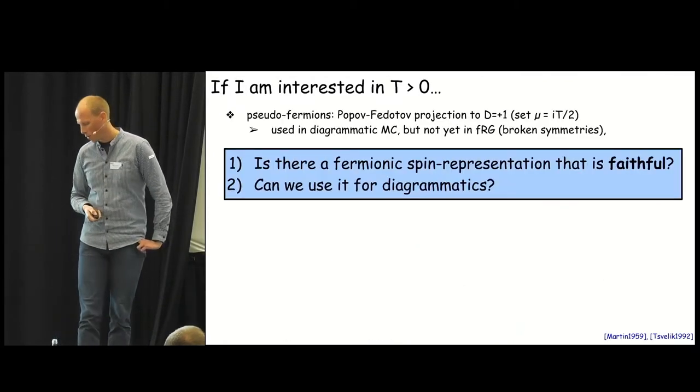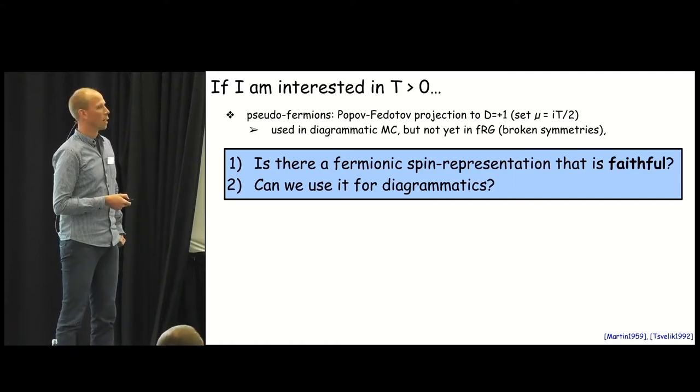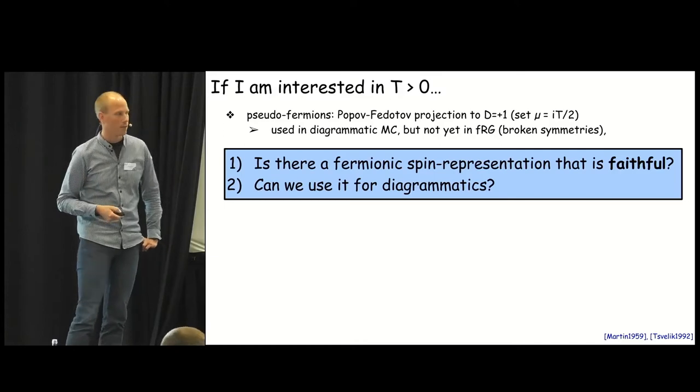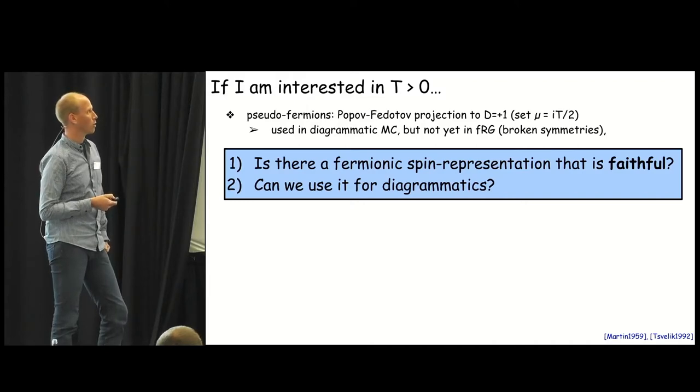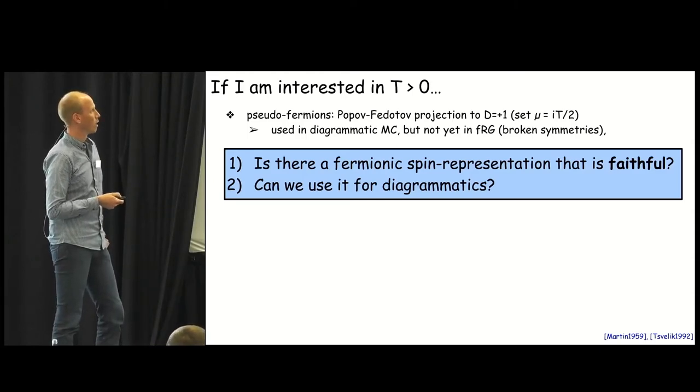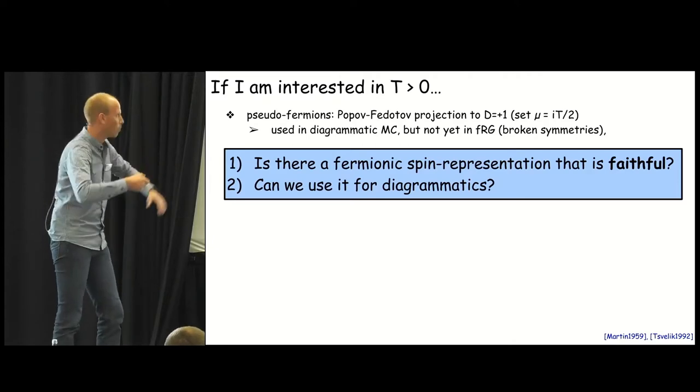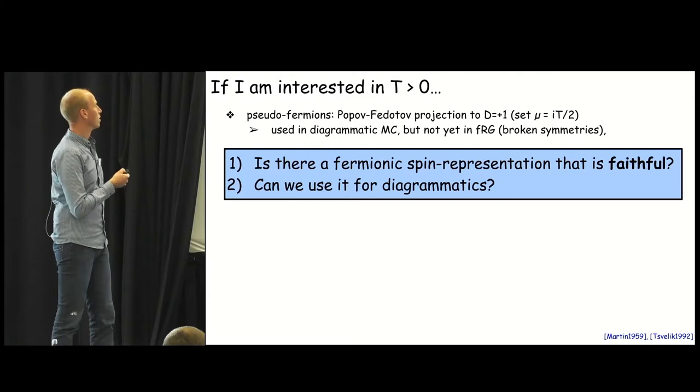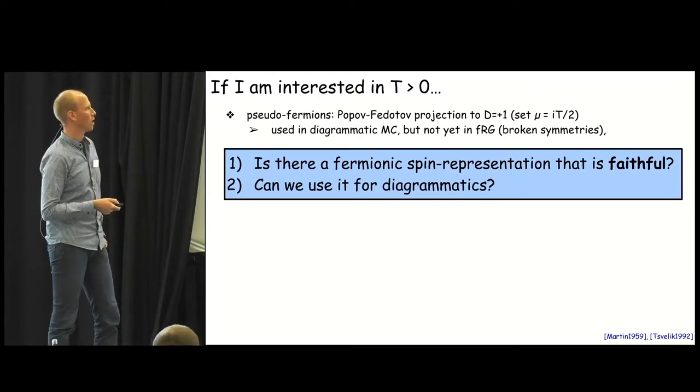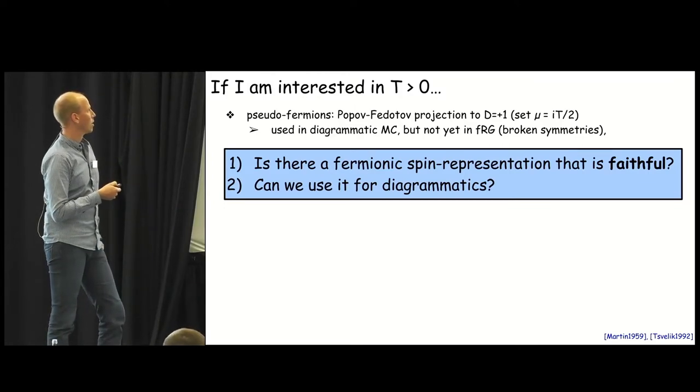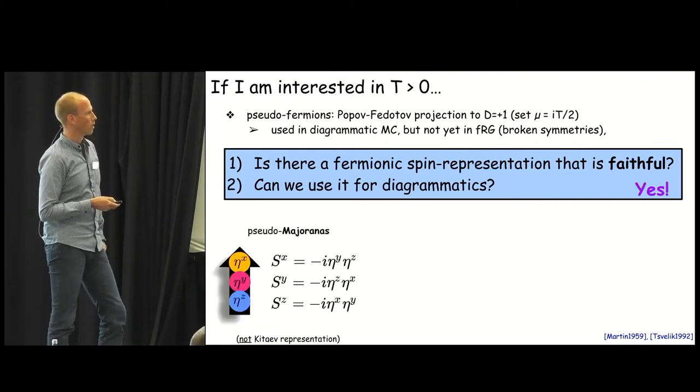This is for T equals zero and now I want to ask the question what happens if you are interested in T larger than zero, finite temperature as is usually the case in experiments. One remark for the experts: there is a way to project onto the D equal plus one subspace that goes by the name Popov-Fedotov projection and uses an imaginary chemical potential. That might sound strange and it is really hard to implement to input this into the functional RG and has not been achieved so far but this is like the background of the diagrammatic Monte Carlo. But say I don't want to do that I want to choose a simpler way. So is there maybe a fermionic spin representation that is always faithful and if yes can we use it to do diagrammatics with it? And the answer is yes.